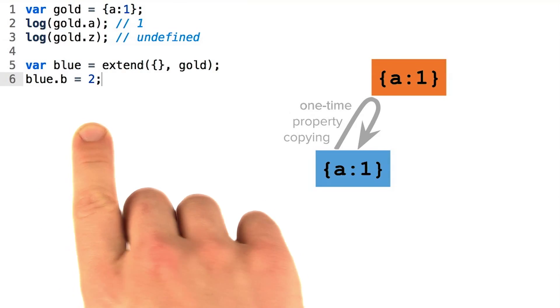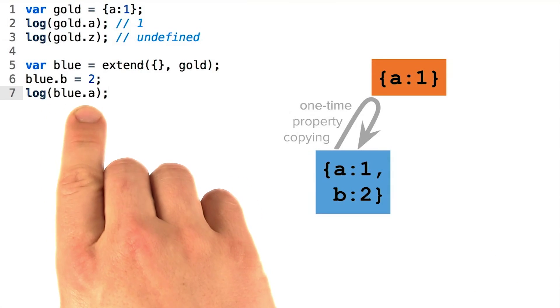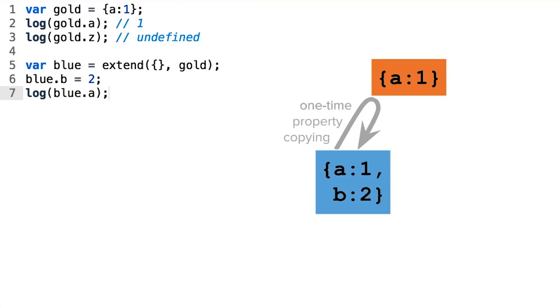Let's try adding a new property to the blue object. Now of course, when we go to do a lookup on a property that got copied onto the blue object, we get the value we'd expect, which was originally copied over from gold.